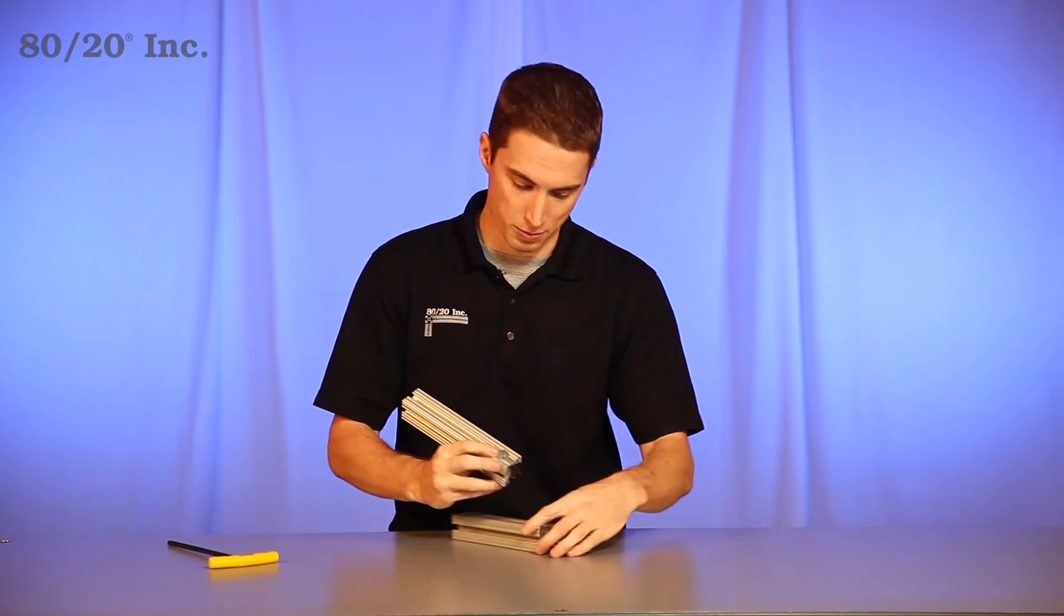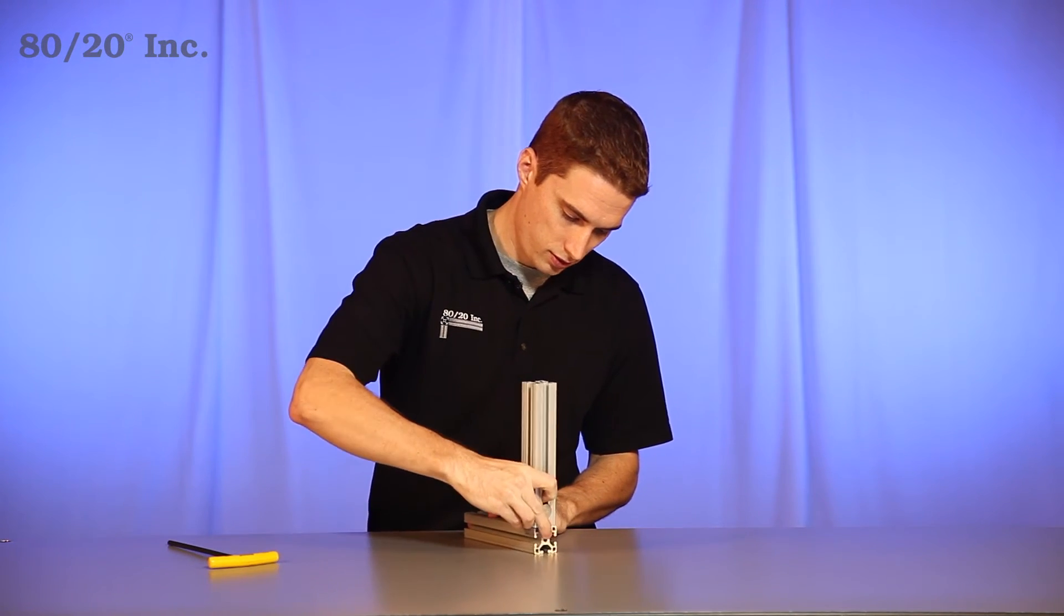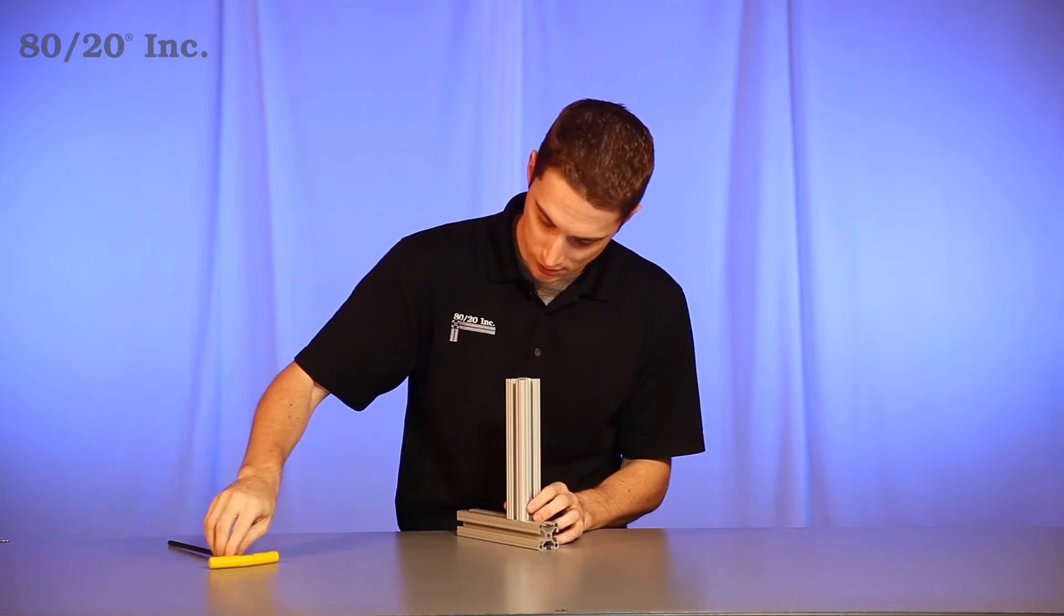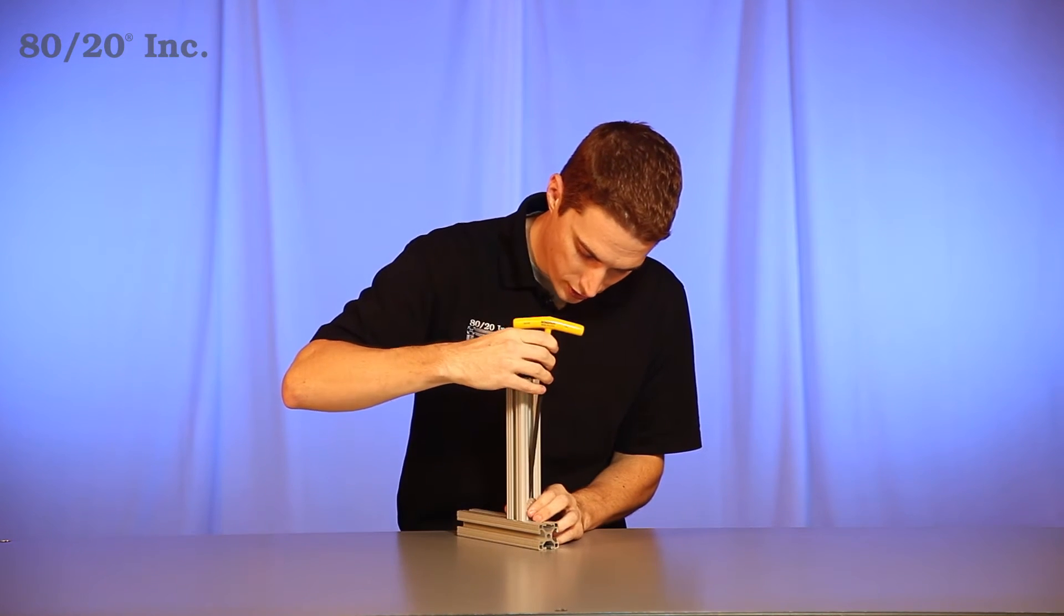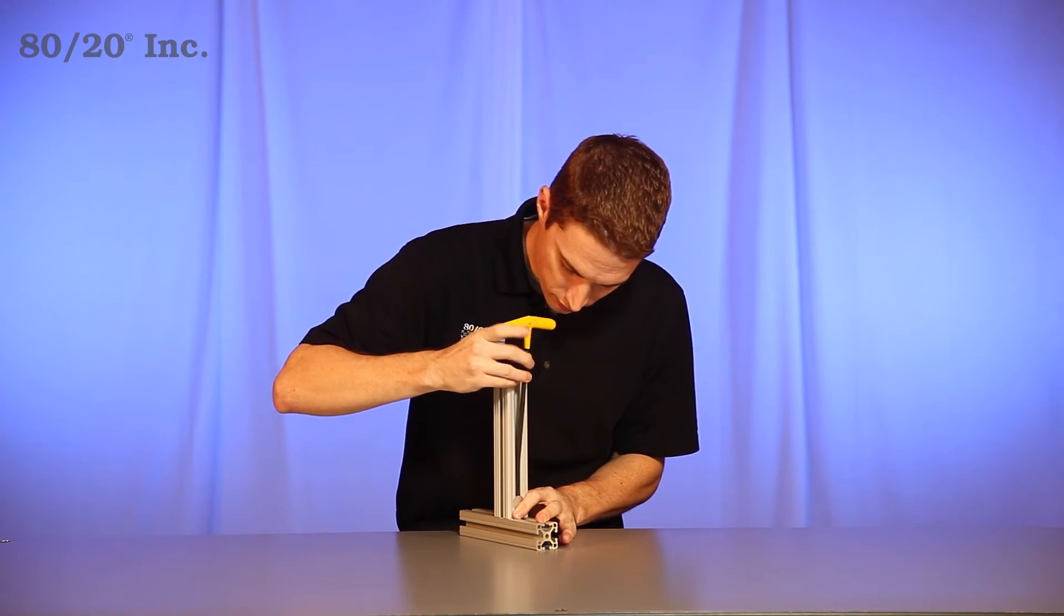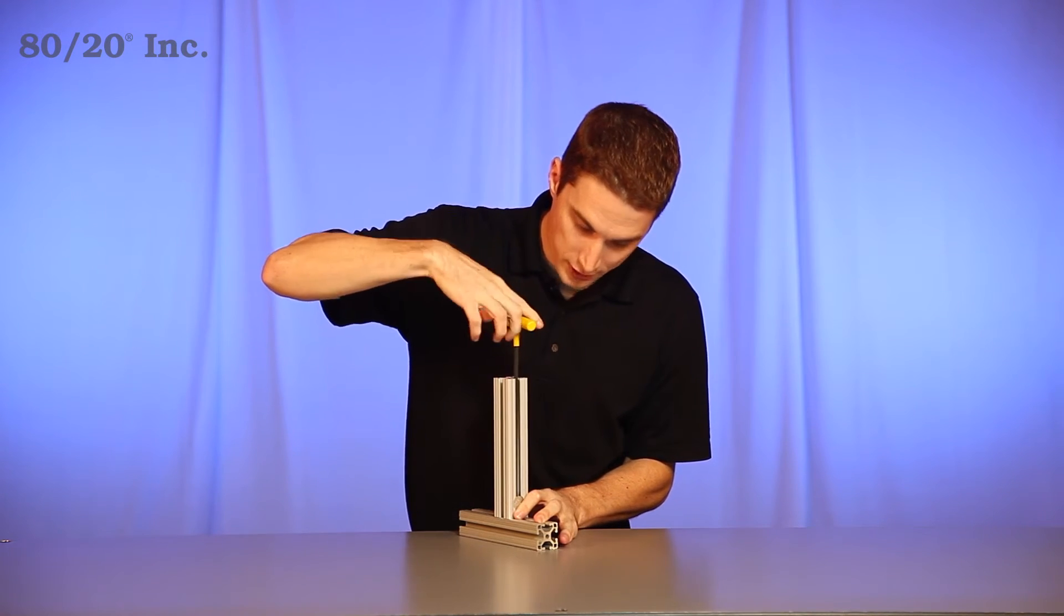Next you'll want to take the second extrusion bar and slide the anchor fastener into it. Take your wrench, find your desired location, and tighten down firmly.